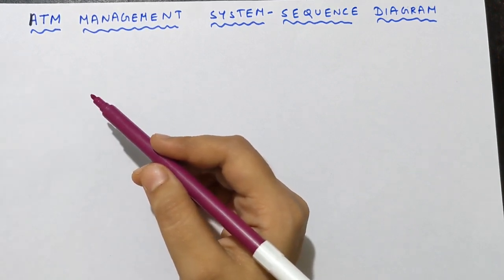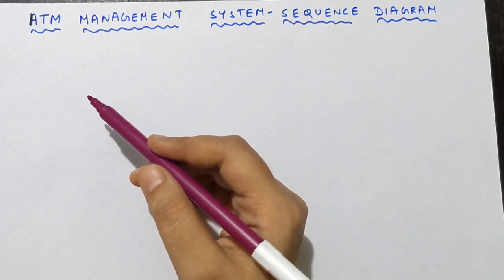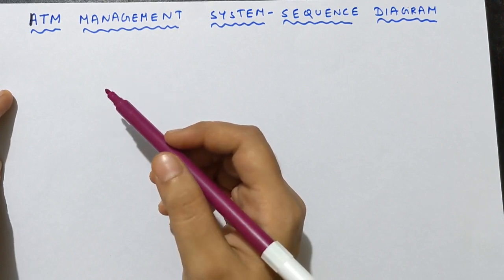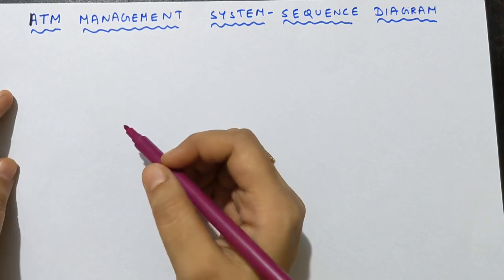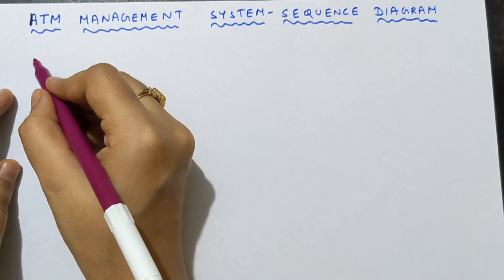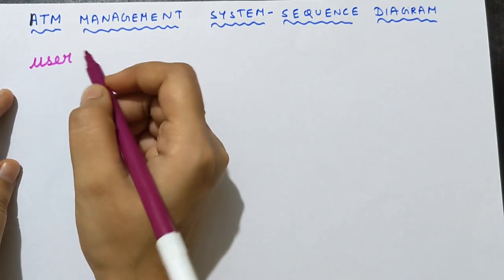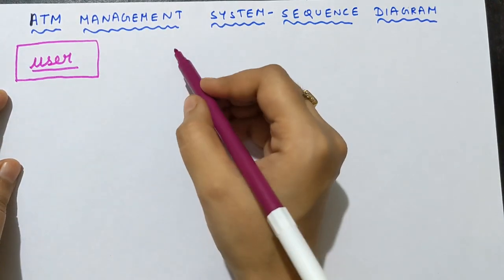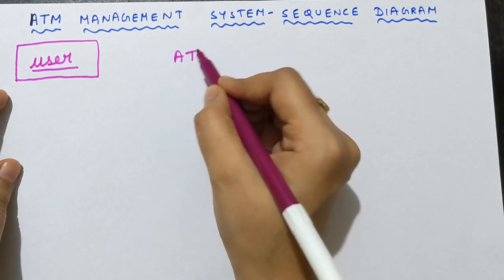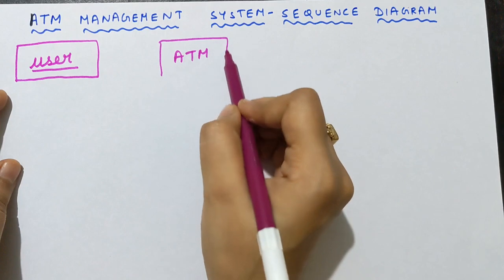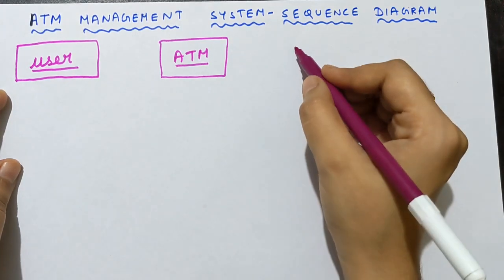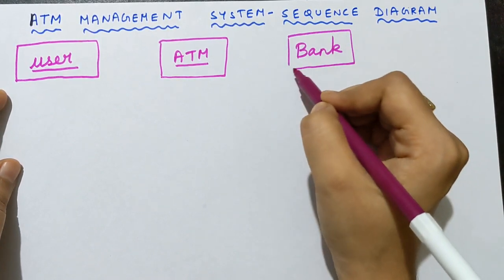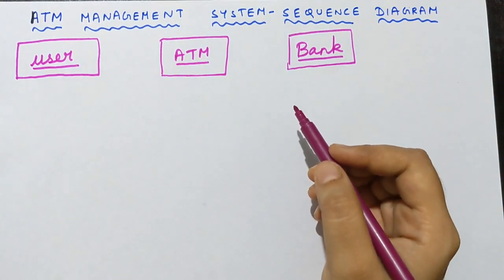Next, customers — who are called users — are also an object. In a sequence diagram, we need to write the multiple objects inside a rectangular box and underline it; it is mandatory. So the first object is user. I am writing the object name inside a rectangular box and underlining it. The second object is ATM, and the third object is bank — each drawn in a rectangular box and underlined. This is the first step in the sequence diagram.